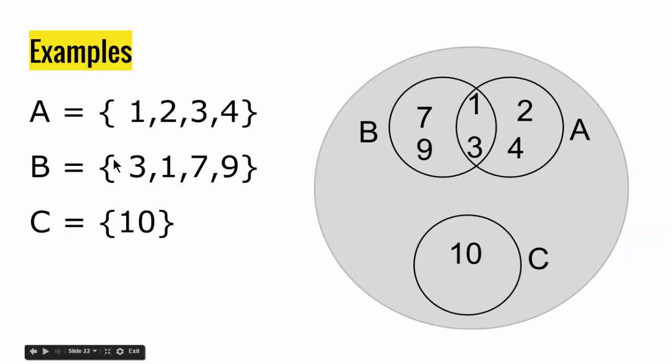Let me give you an example. Let's say we have three sets: A, B, and C. A has elements 1, 2, 3, 4. B has elements 3, 1, 7, 9. And lastly, C has the element 10.